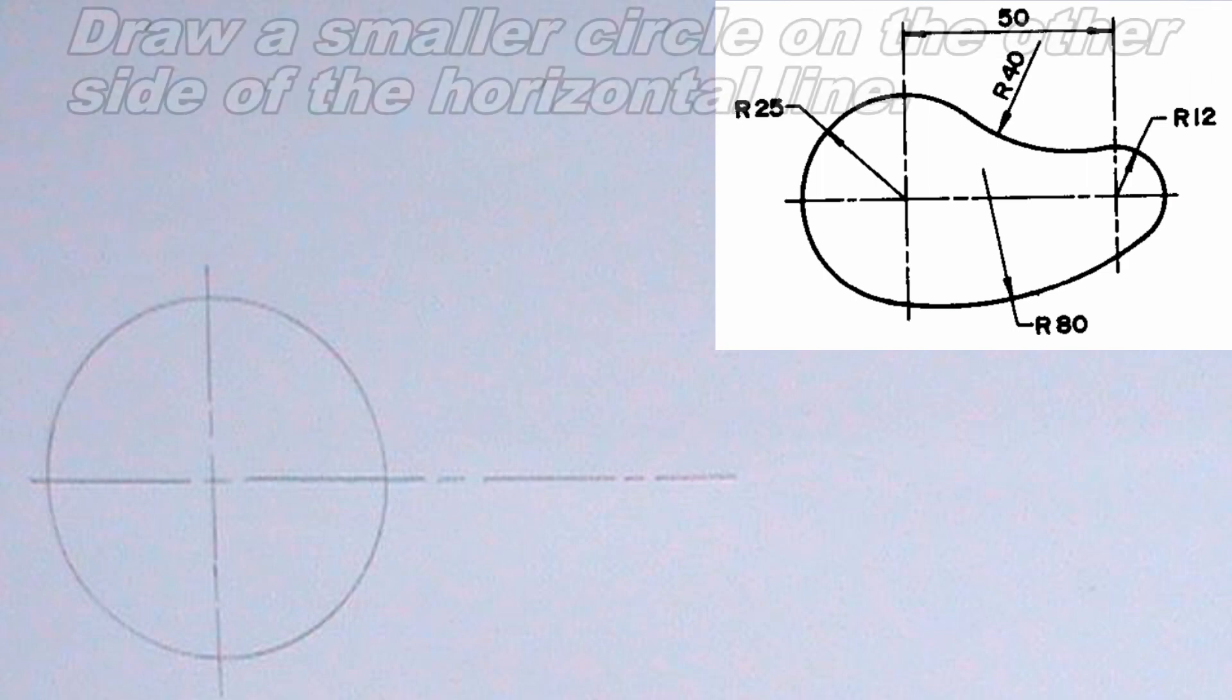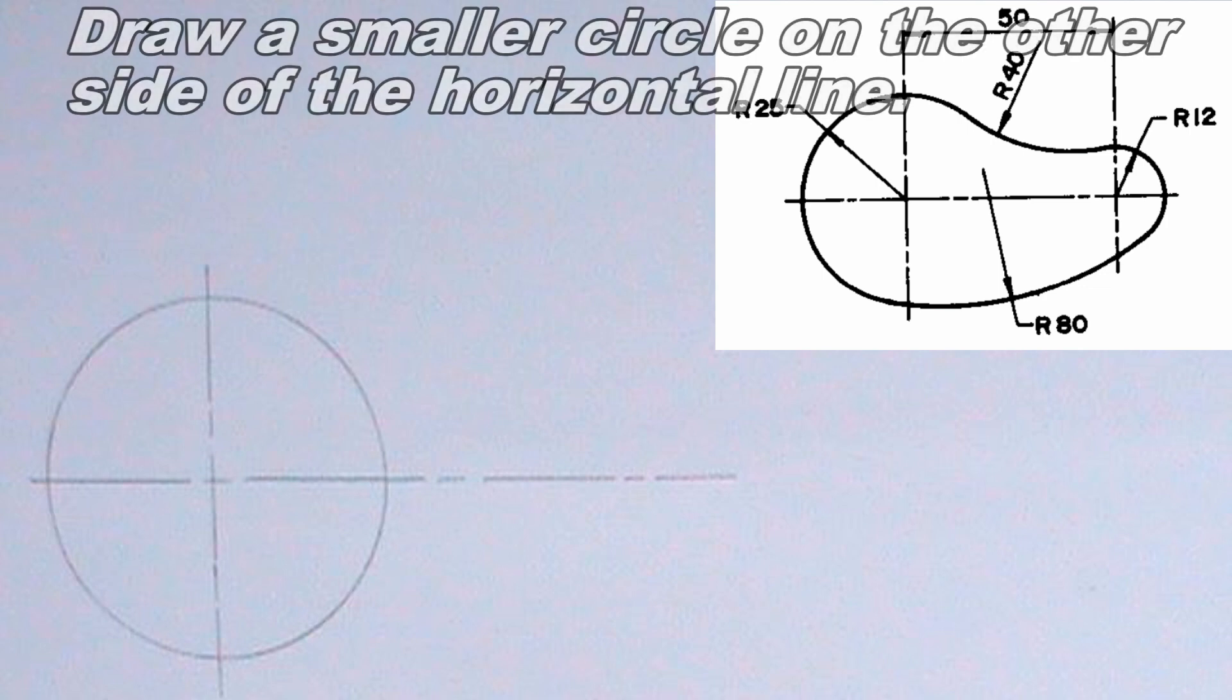The next thing I will do is to draw another circle. The center of this circle should be 50 millimeters from the center of the first circle. I will draw a circle of radius 12 millimeters.